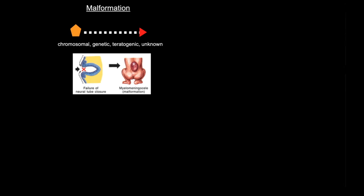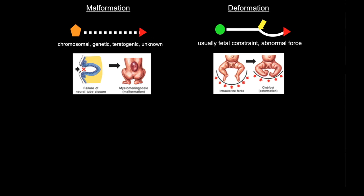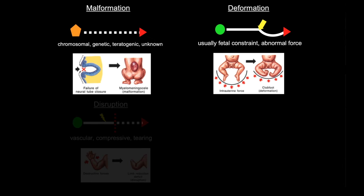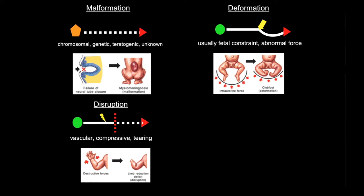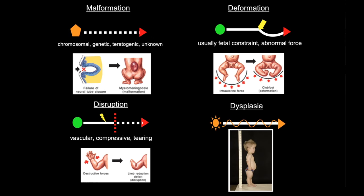So let's review. Malformations are intrinsic defects in the developmental process and can have multiple etiologies. Deformations happen later, alter normal growth, and are caused by external forces. Disruptions are also externally caused, with breakdown of tissue caused by vascular or compressive forces. Sometimes the degree of force actually determines whether we have a deformation or a disruption. And finally, we have dysplasia — intrinsic changes in the tissue or organ model.